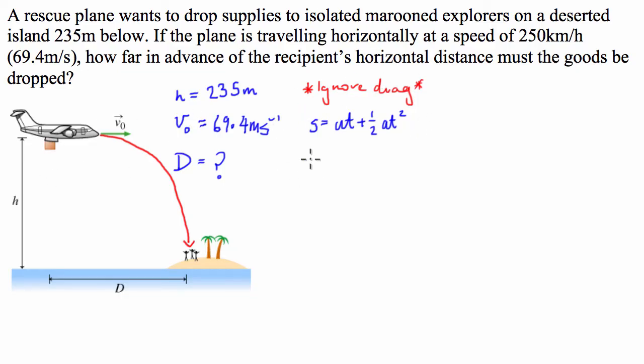So let's put in what we know. We know that s is going to be 235 meters, it's got to fall through, is equal to zero times time, so that's going to be zero, plus one half, 9.81 times the time squared.